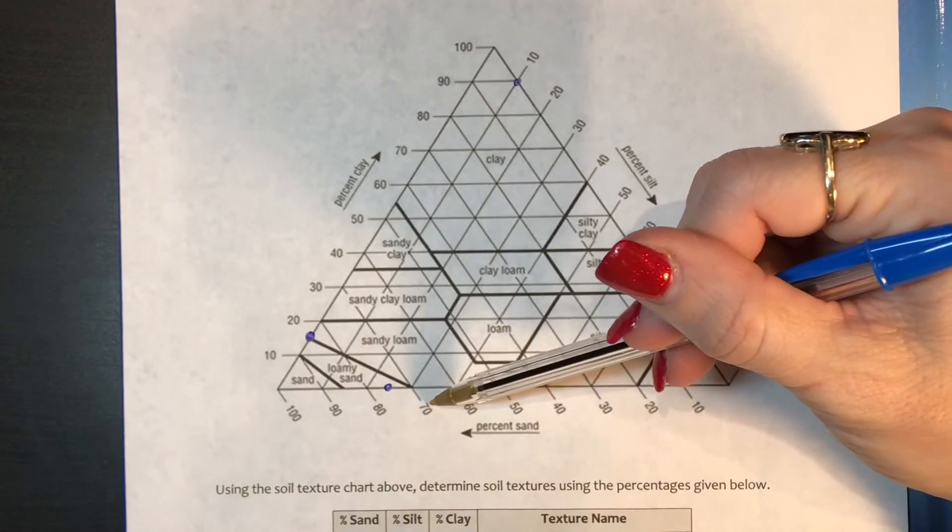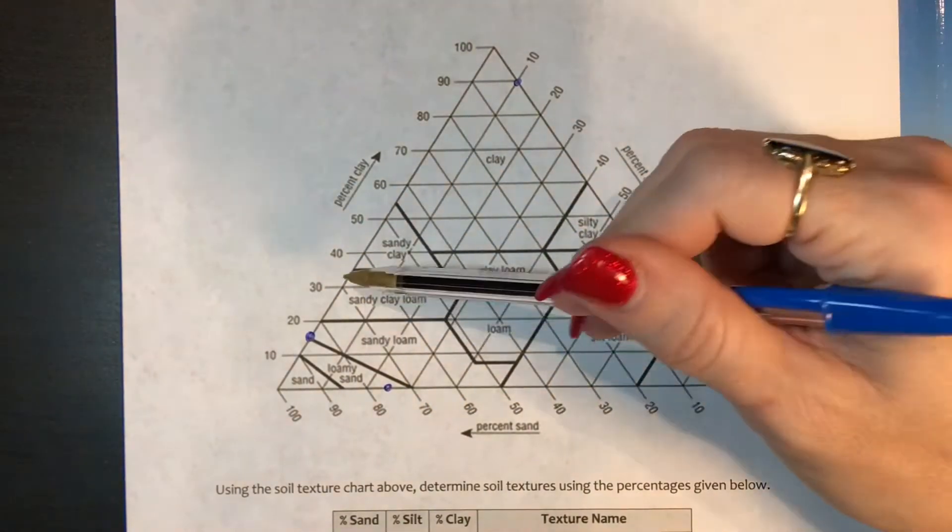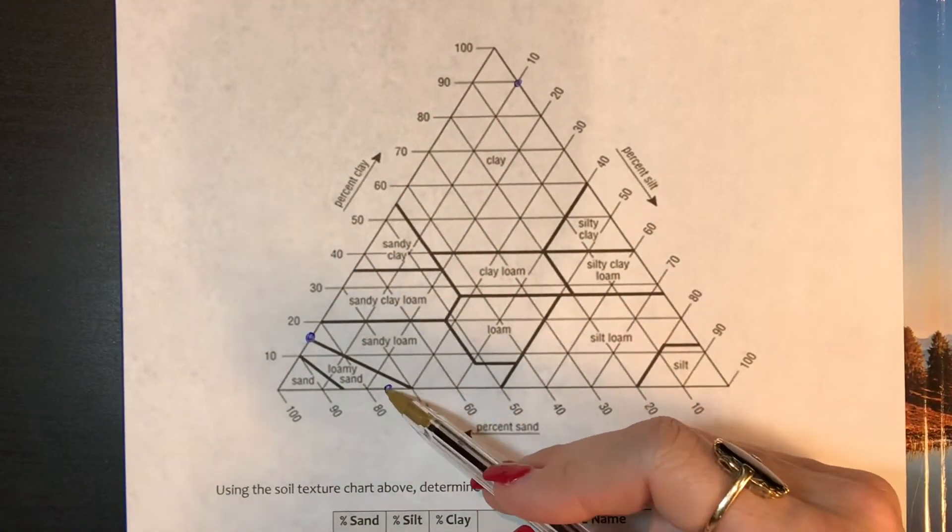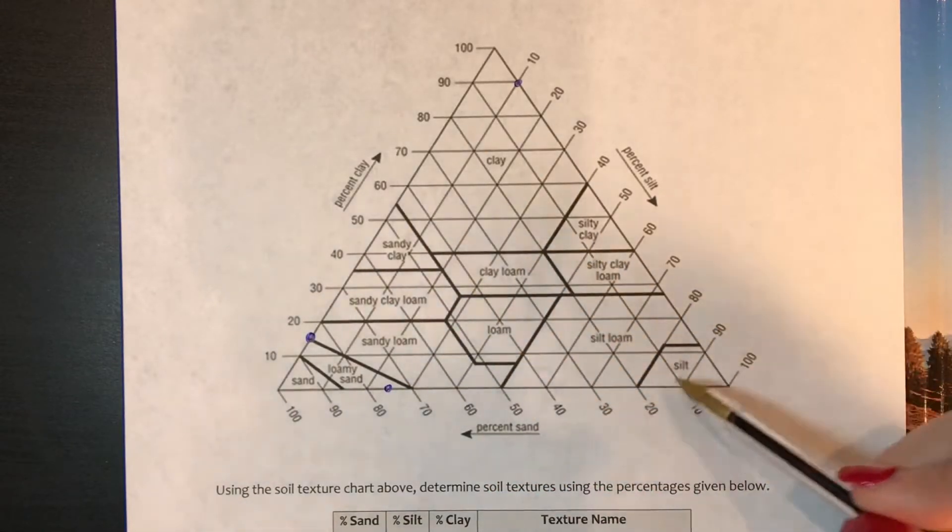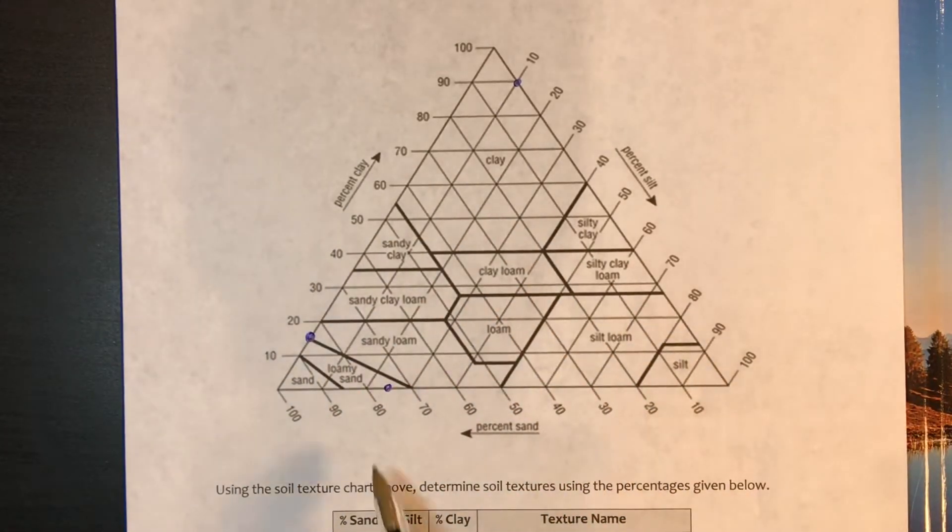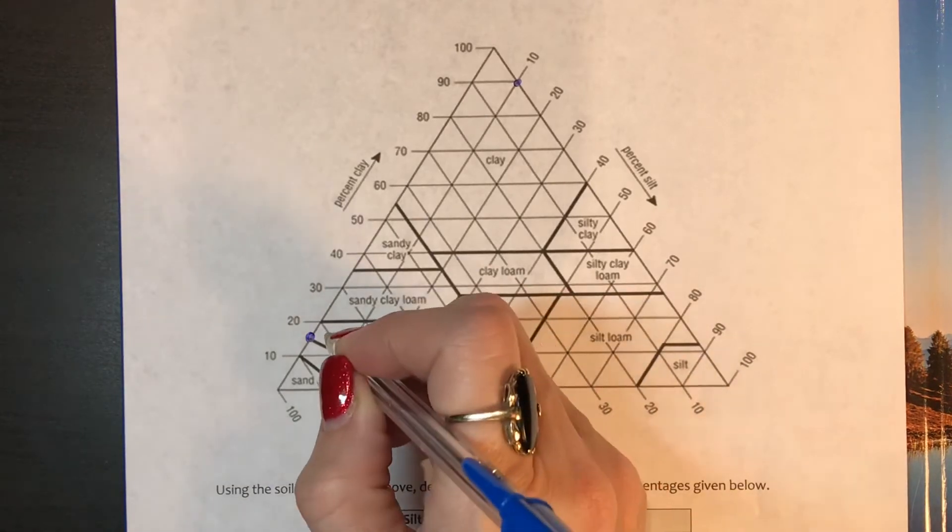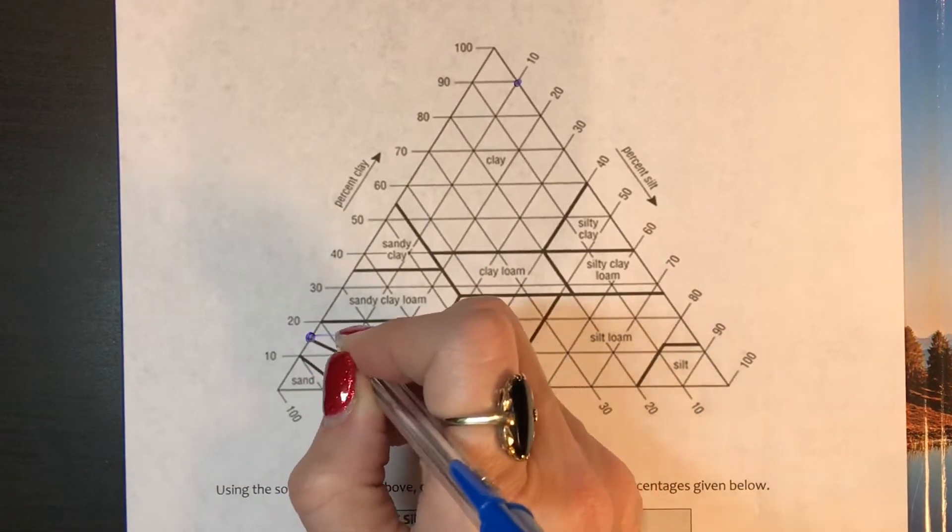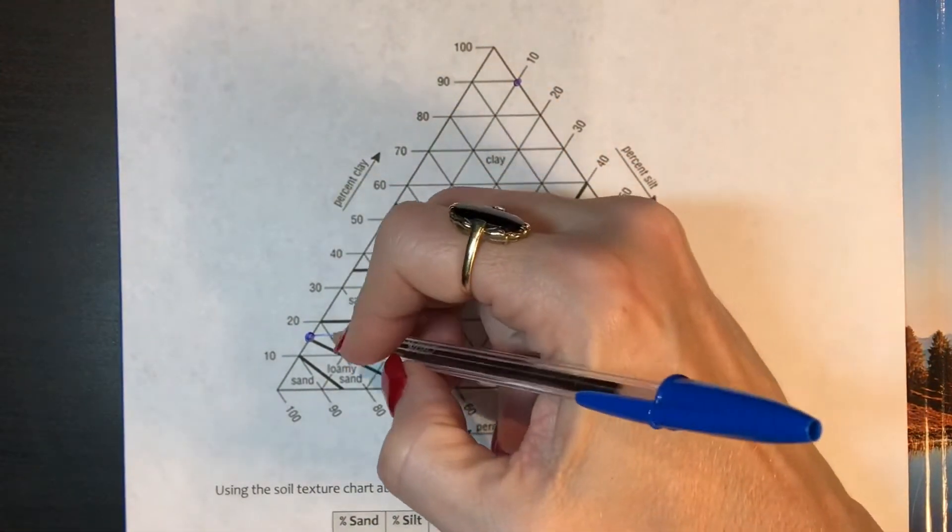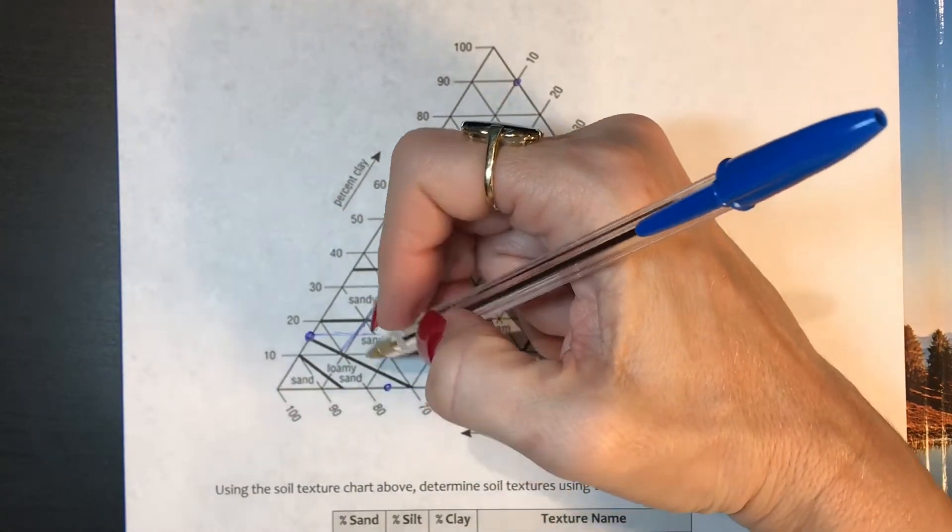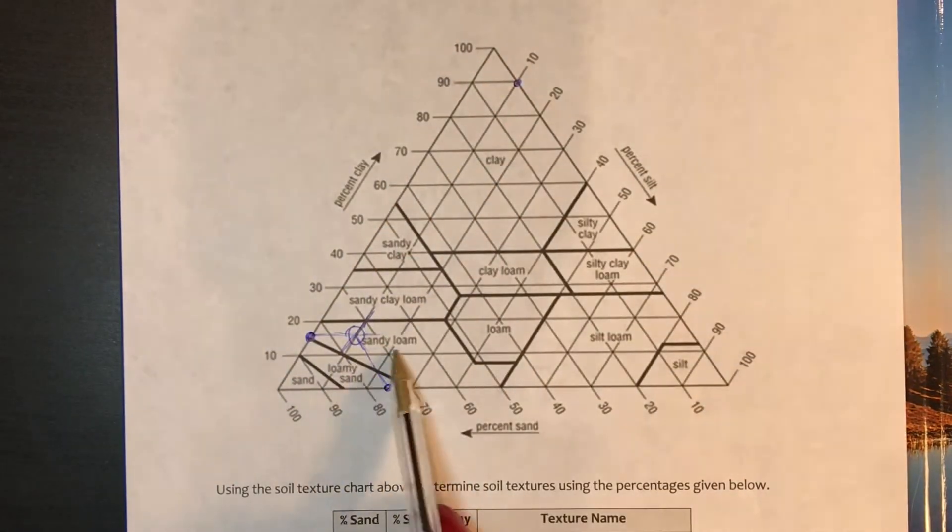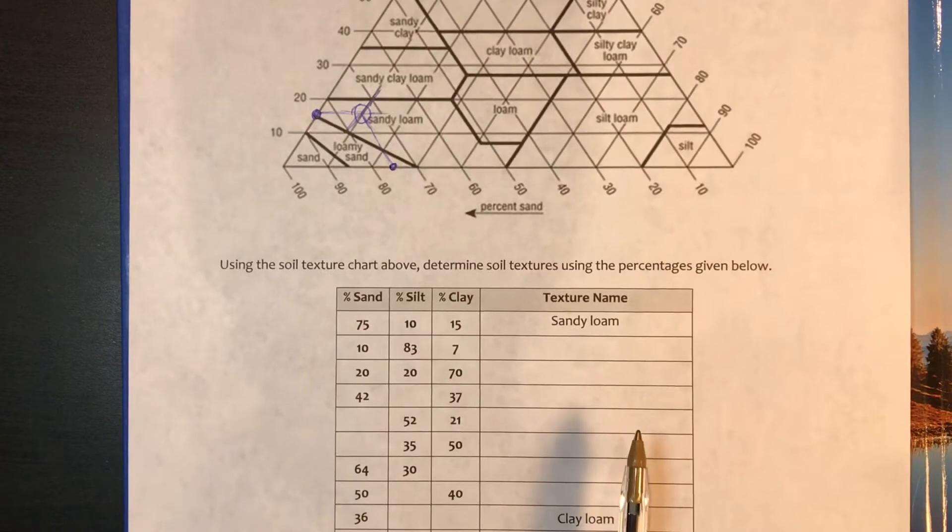Note the way that the numbers are oriented here. That tells you which way you're following the lines. Clay is going to go in this direction. Silt goes in this direction. And sand goes in this direction. So you can see they all meet right here in sandy loam, which is why it says sandy loam.